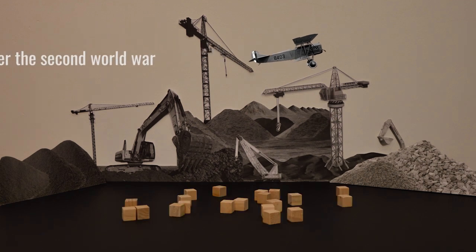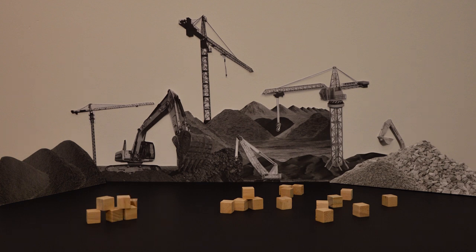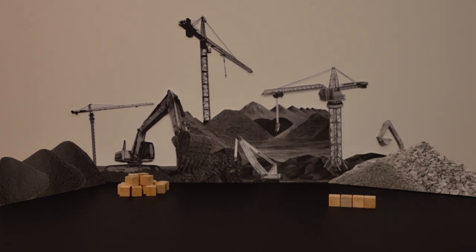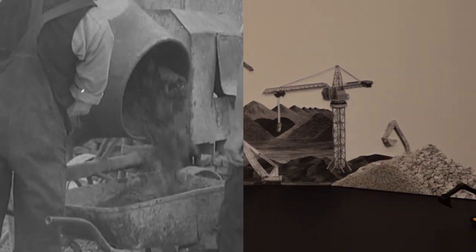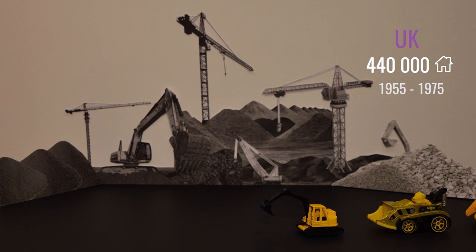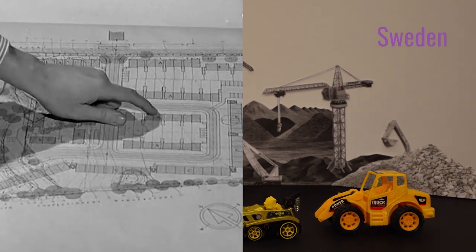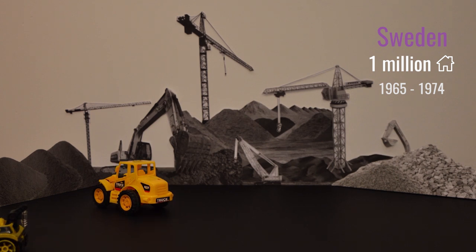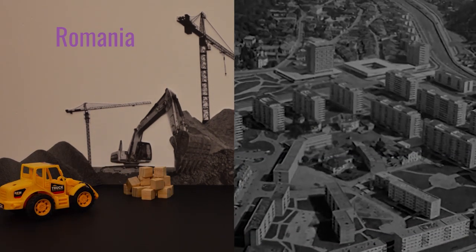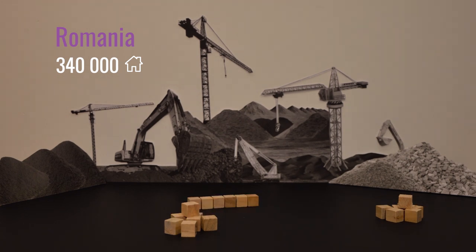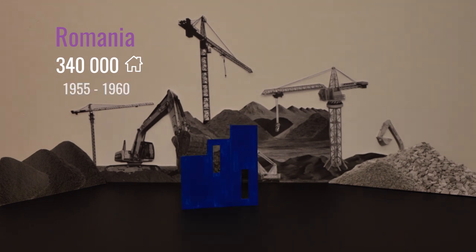After the Second World War, with millions in need of homes due to wartime destruction, migration and population growth, Europe embarked on a wave of investment of public money in the production of public and social housing, mostly through mass construction. Just in the UK, around 440,000 apartments were built between 1955 and 1975. In Sweden, the state Million Homes Programme built close to 1 million new homes between 1965 and 1974. Romania's new socialist government commissioned the construction of 340,000 dwelling units, most of them in the capital, Bucharest, between 1955 and 1960.